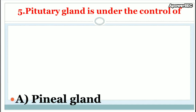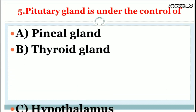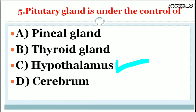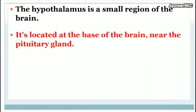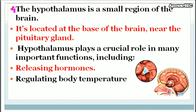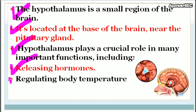Question: The pituitary gland is under the control of which structure? The correct answer is the hypothalamus. The hypothalamus is a small region of the brain located at the base near the pituitary gland. It plays a crucial role in releasing hormones and regulating body temperature.